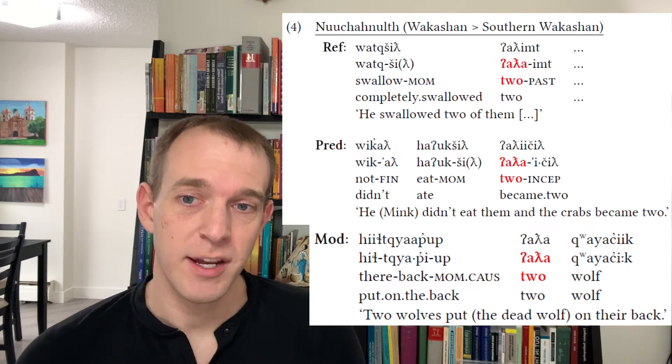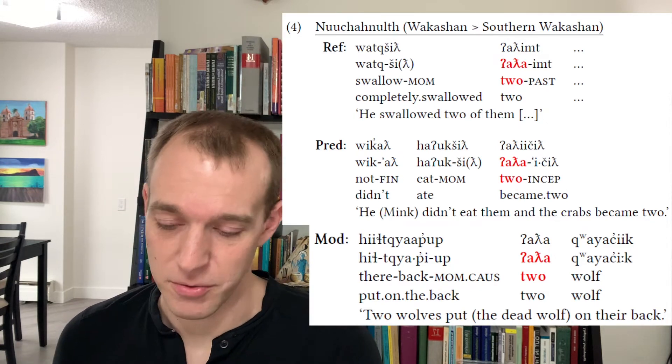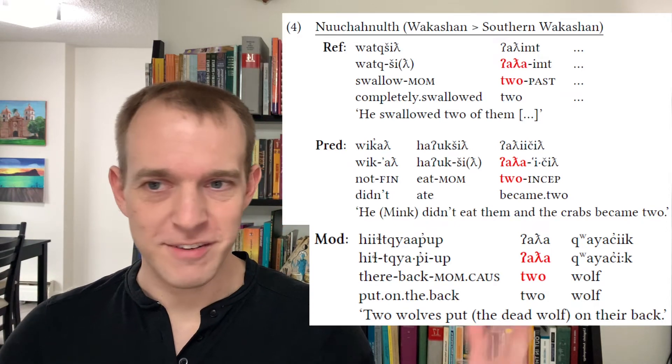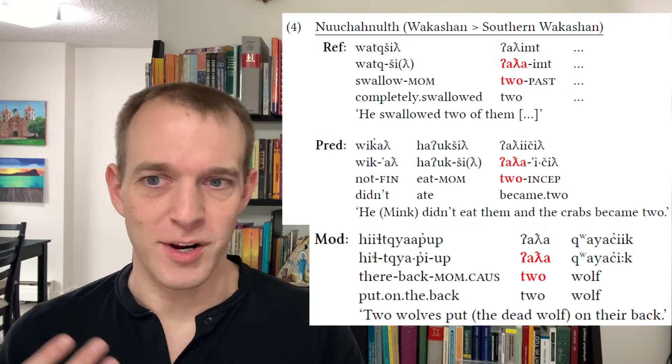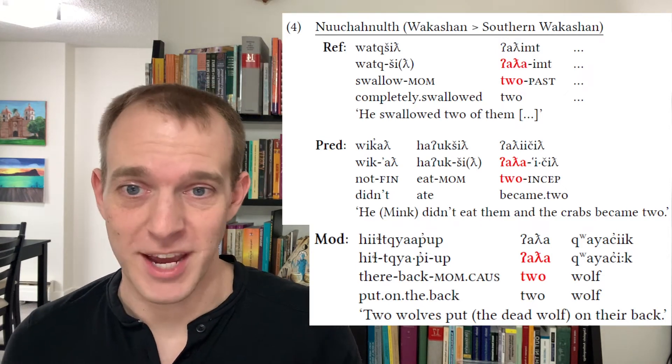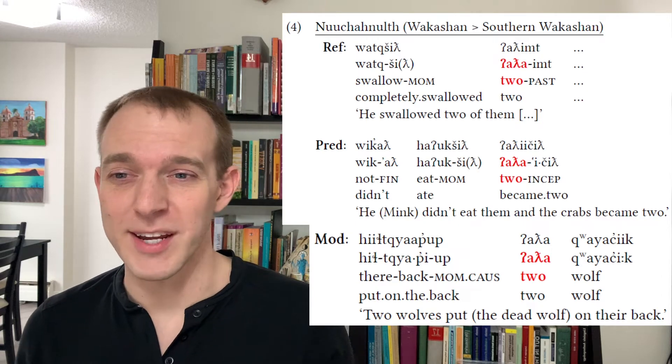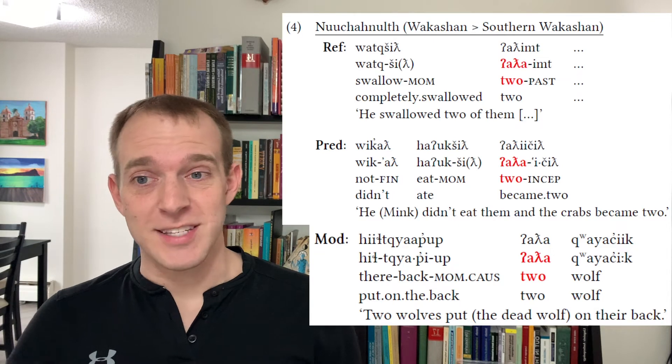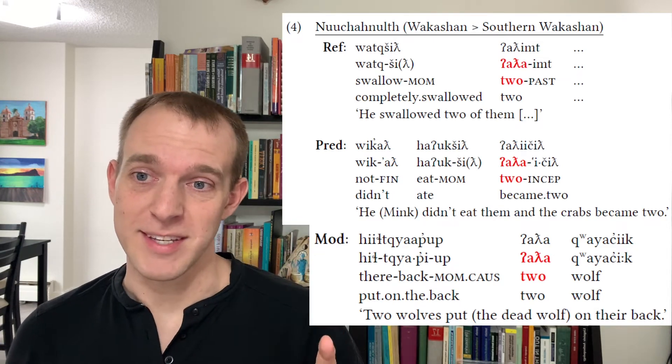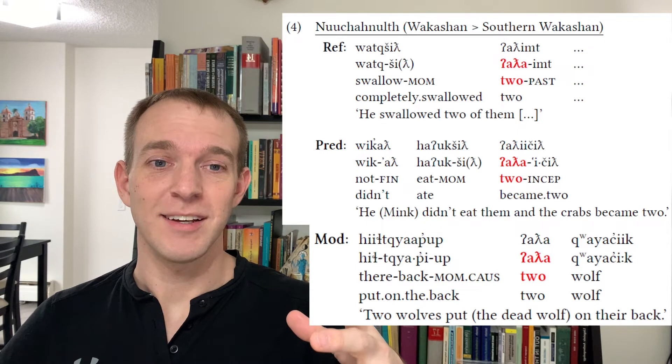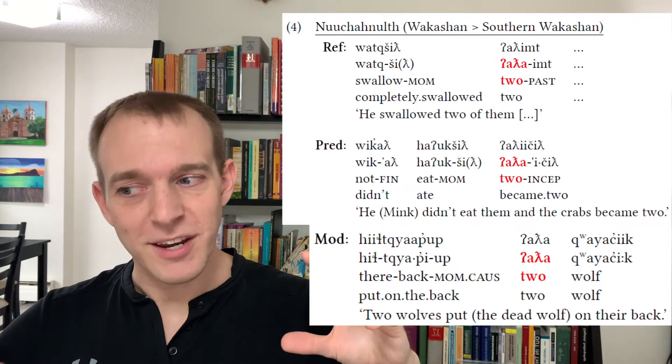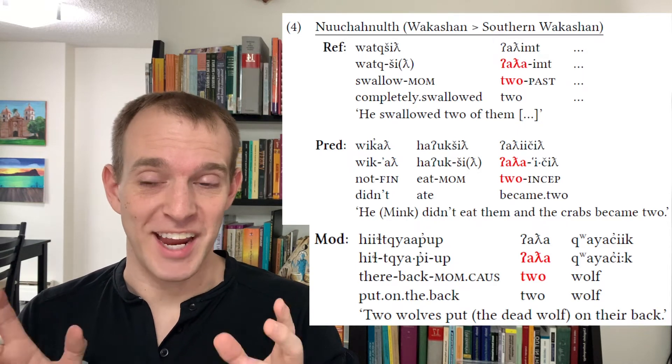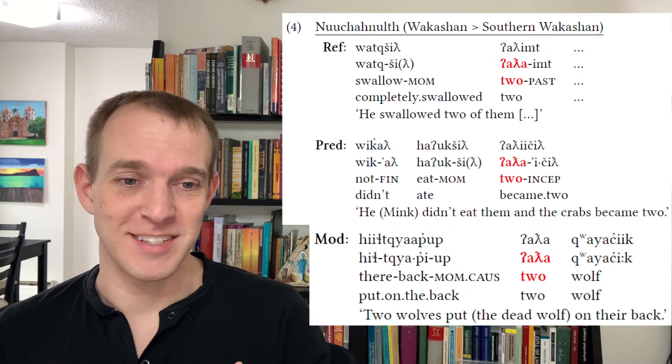So this is the Nuchannath language, which is a Wakashian language spoken in the Pacific Northwest. This entire region is really known for having very fluid boundaries between what you might want to analyze as noun, verb, and adjective. And no one's really come up with conclusive ways of defining noun, verb, and adjective in these languages. Side note, what's really interesting is that there's several language families in the area that all do this. And these are unrelated language families. So this pattern has been borrowed into these languages. This part of speech fluidity is an areal feature. It's been borrowed across these languages. Wicked cool.